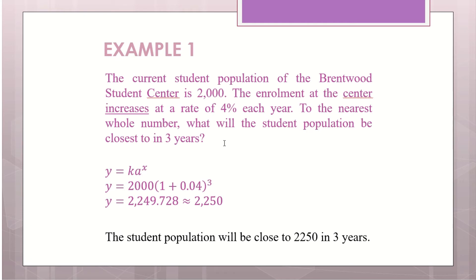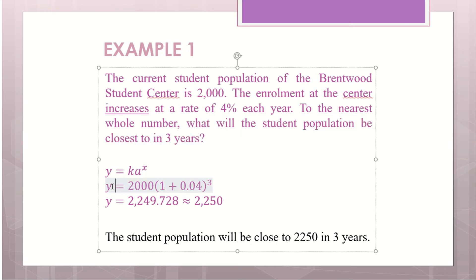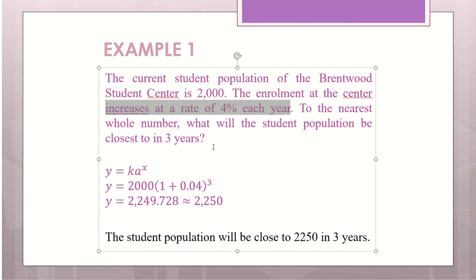Let's look at example 1. We write the formula: Y equals to K times A to the power of X. Y is the new value — what you want to predict in three years' time. 2000 is K, the original value. Since it's increasing, A is 1 plus 0.04. Then you put it to the power of 3 years. You give the answer as the closest whole number because this is human population — it cannot be in decimals.